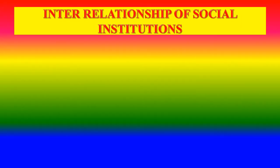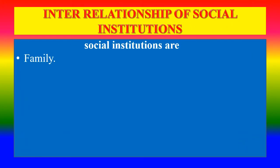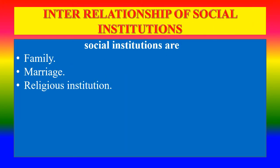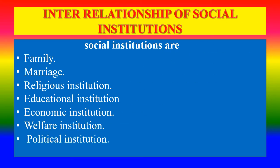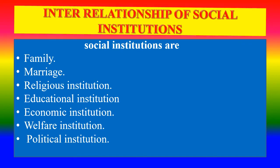Interrelationship of social institutions. The interrelated social institutions are: family, marriage, religious institutions, educational institutions, economic institutions, welfare institutions, and political institutions.